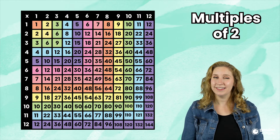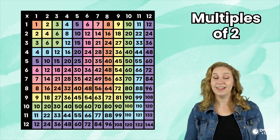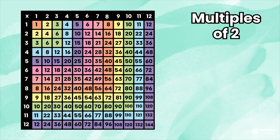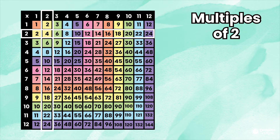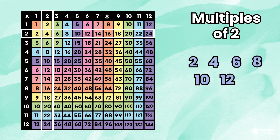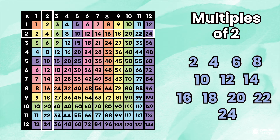Let's look at the multiples of 2. Can you think of a few multiples of 2? Let's find some together. I'm going to use this multiplication chart to find the multiples of 2. Here, let's look at everything that is below and besides the 2. What numbers are in the 2 row? 2, 4, 6, 8, 10, 12, 14, 16, 18, 20, 22, and 24.